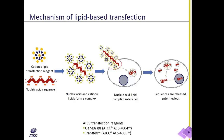ATCC offers two transfection reagents for the delivery of plasmid DNA: GeneX Plus and Transfex. GeneX Plus is a good choice for suspension cells. Transfex can be thought of as an all-purpose transfection reagent — we have developed optimized protocols for many continuous cell lines and primary cells. These protocols can be found on our website or by contacting technical services.